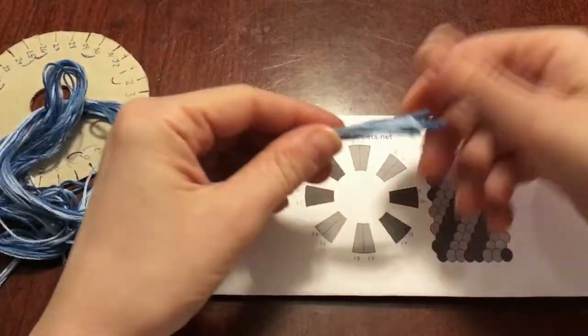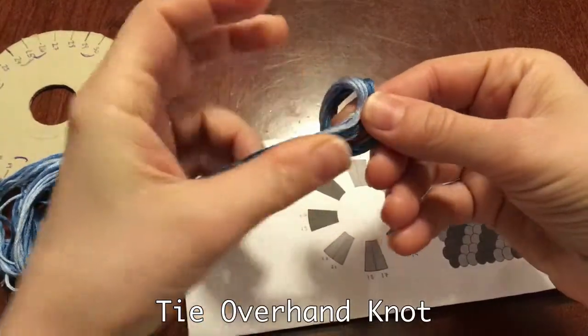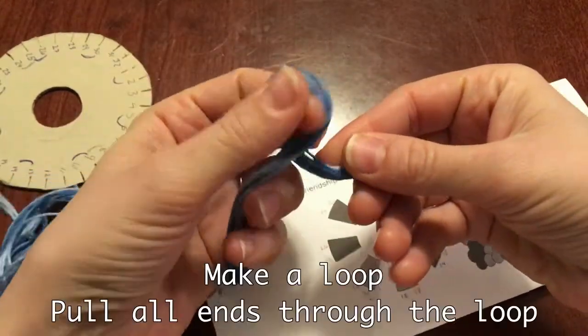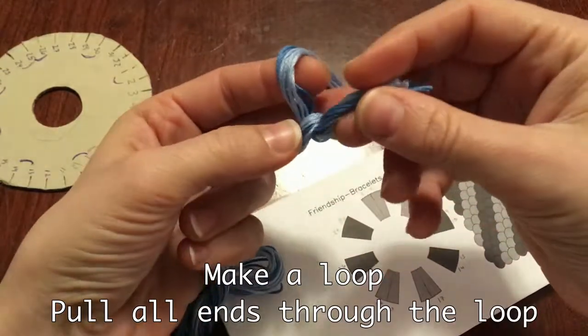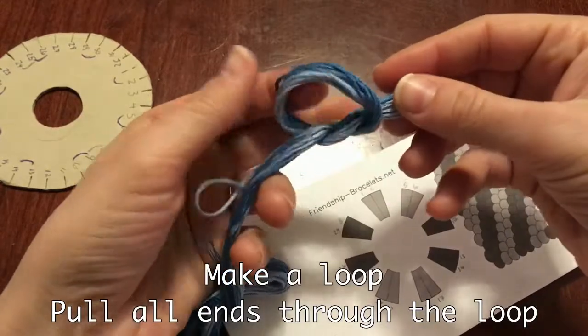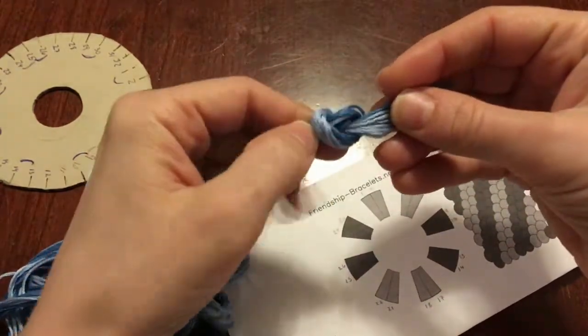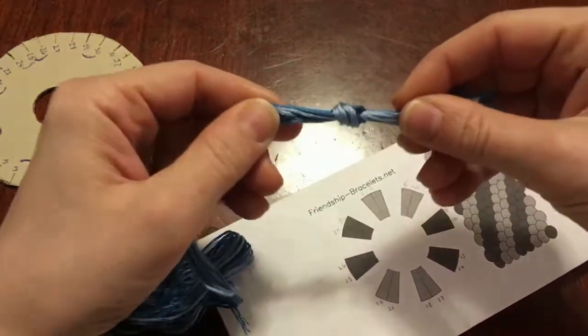Put all of the ends together and tie an overhand knot. Make a loop, put your fingers through the loop and pull the ends through. Tighten that knot and now you're ready to begin weaving.